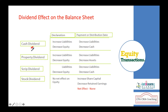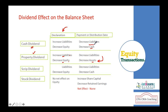For a property dividend, the declaration date entry is the same — debit Retained Earnings, credit Dividend Payable. However, on the payment date, instead of paying cash you settle with an asset — a vehicle, land, building, or any asset given to the shareholder. The only difference is that in place of Cash, the Asset account is credited because the asset is going out of the business.